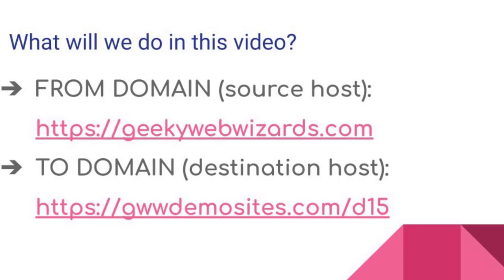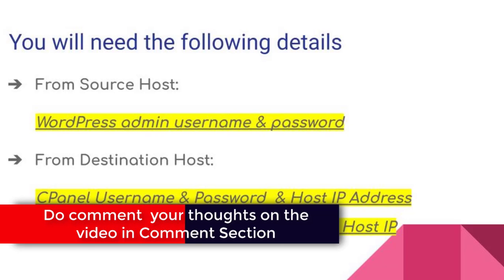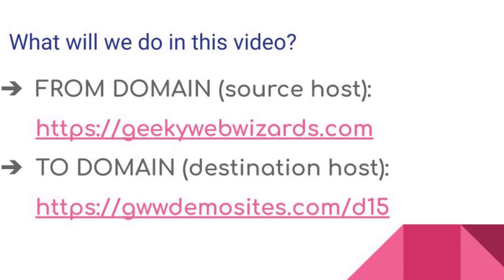Before we start, here are the details you need. From the source host, you need the WordPress admin username and password. From the destination host, you need the cPanel username, password, and host IP address. If the client doesn't share cPanel credentials, ask them for FTP server username, password, and host IP. Also make sure a blank WordPress installation is set up at the destination host location.